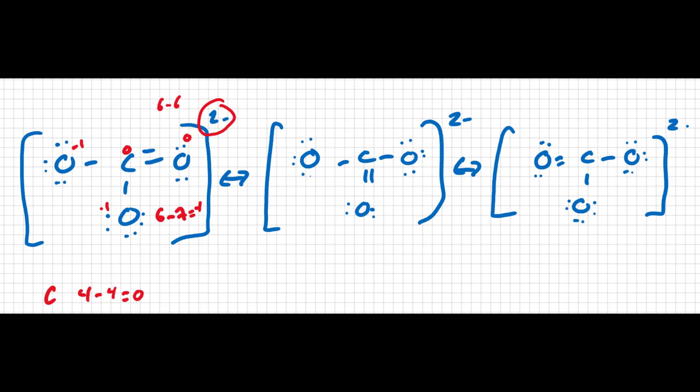As we look at the different resonance structures of carbonate, we see the same pattern: the carbon always has a formal charge of zero, the single-bonded oxygens have formal charges of negative one, and the double-bonded oxygen has a formal charge of zero. Because all three resonance structures have the exact same total amount of formal charge, no one Lewis structure is more stable than the others — they are equivalent.